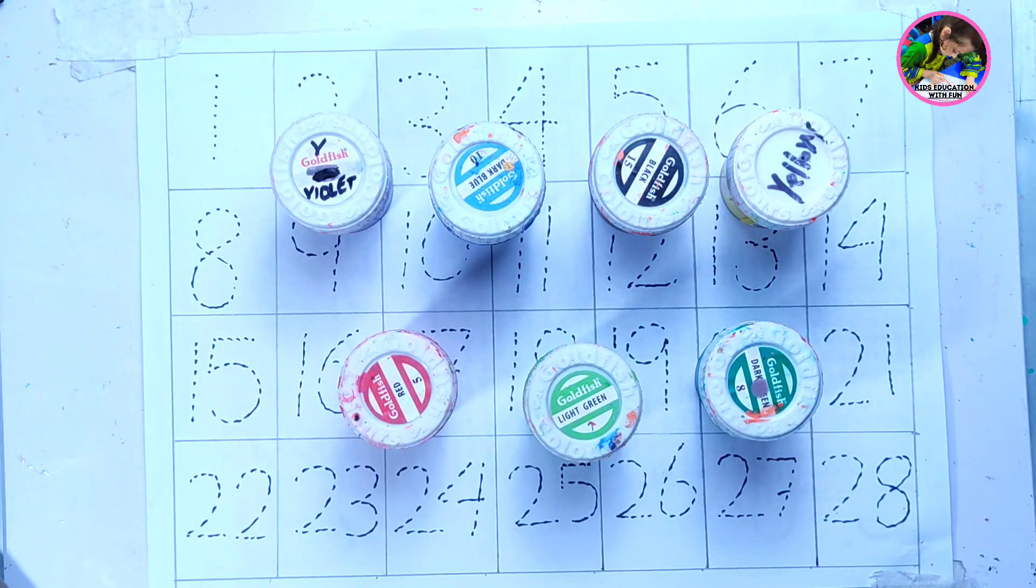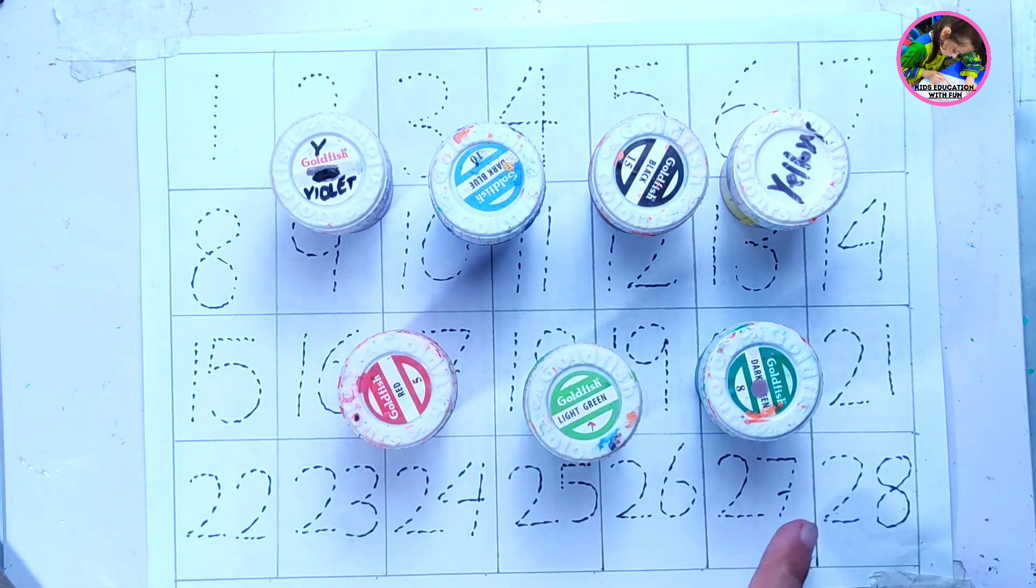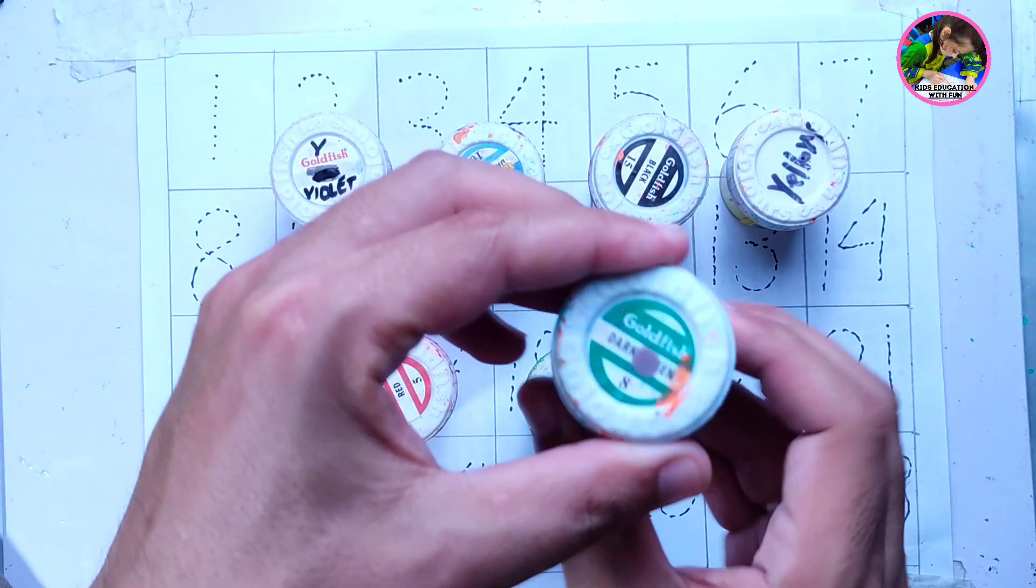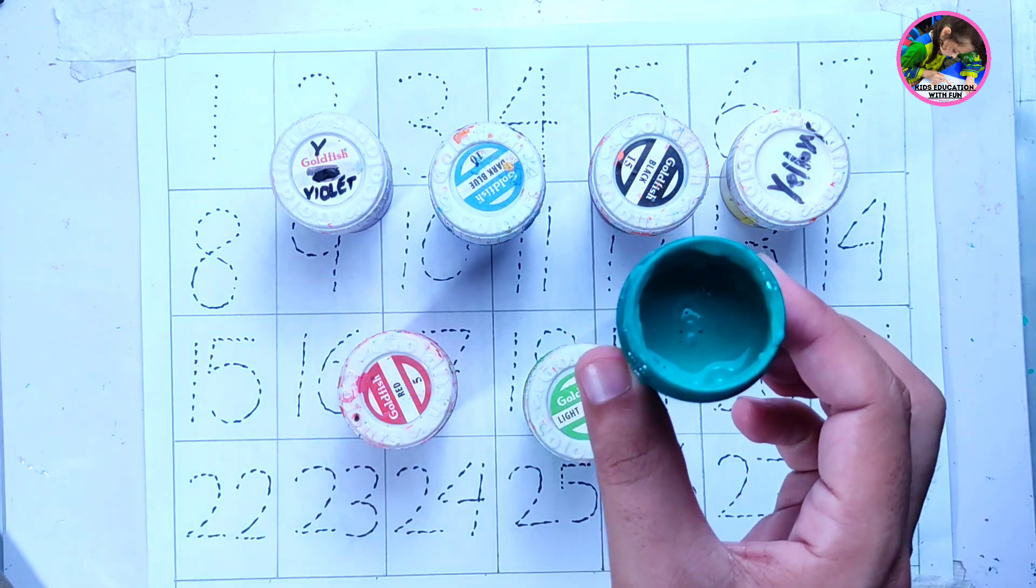Hello kids, welcome to Kids Education with Fun. Dear kids, in this video we are tracing numbers from 1 to 28. So here we have different colors. This is dark green color, which color? Dark green color.